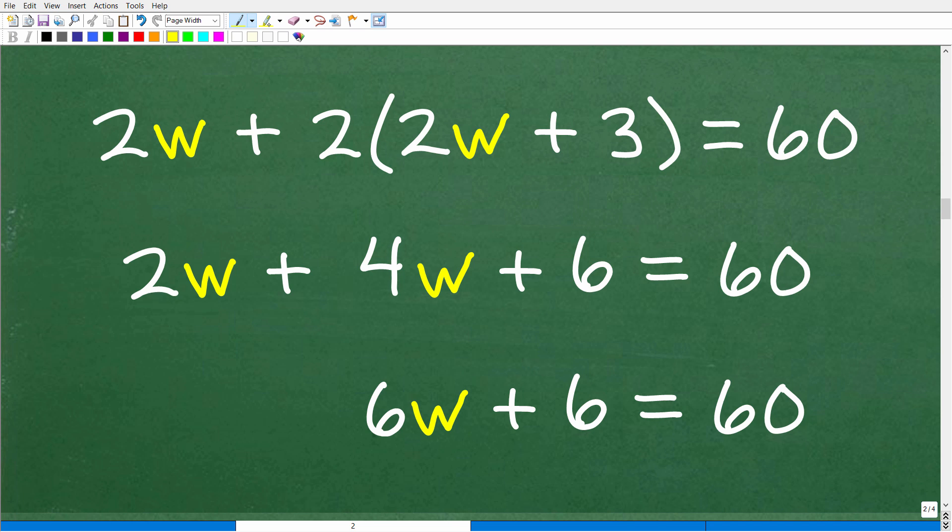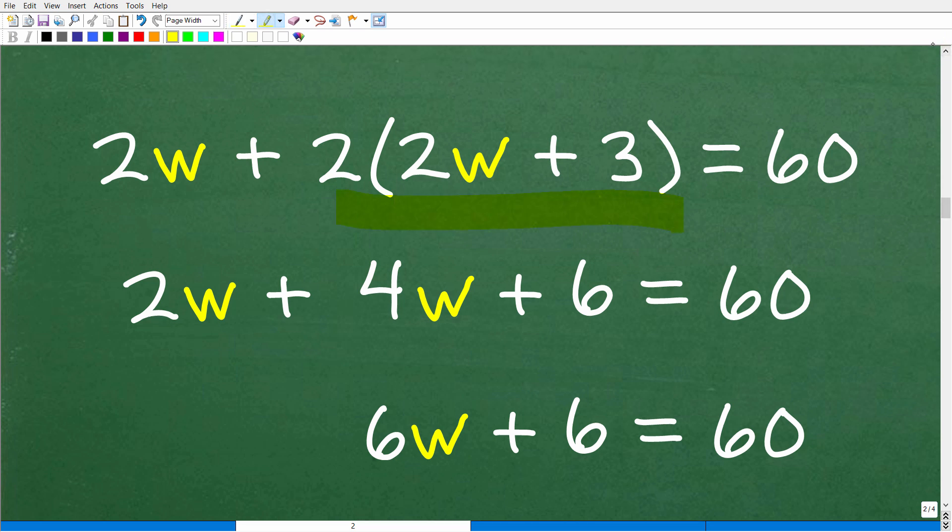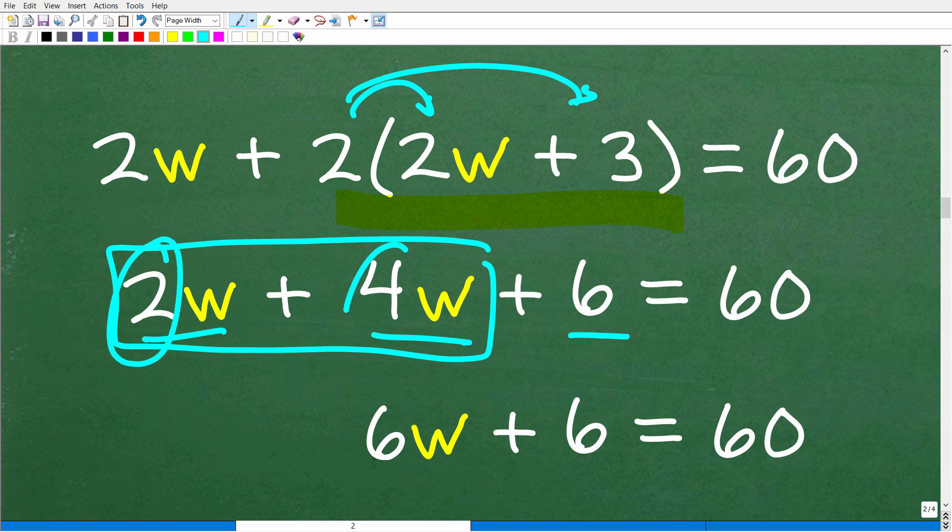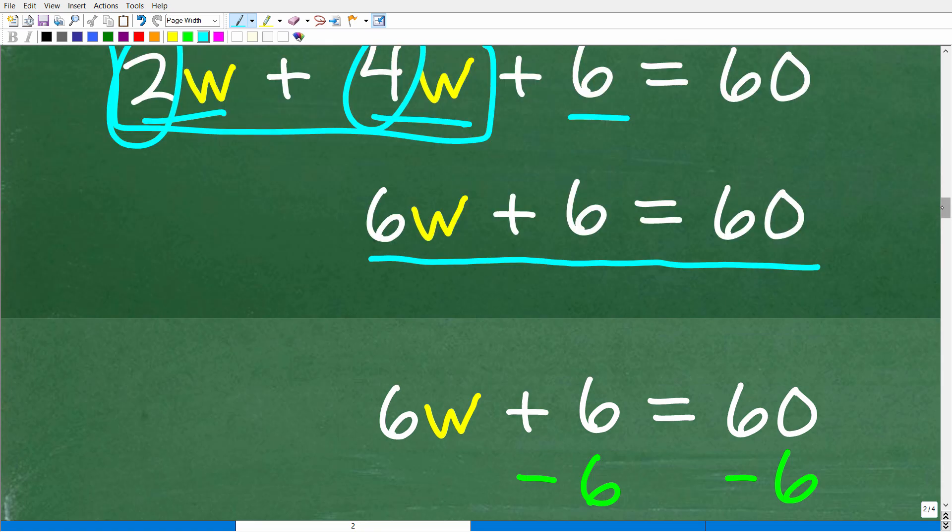Here we go. We get 2W plus 2 times 2W plus 3 is equal to 60. What do we do first? Well, this part of this equation is a part where we need to use the distributive property. Anytime you have a number outside of parentheses, we can't do anything here until we distribute this number to these inside terms. So 2 times 2W is 4W. 2 times 3 is 6. So now I have 2W plus 4W plus 6. 2W and 4W, these here are like terms, so we can add the coefficients, which are the numbers in front of the variables. So 2 and 4 is 6. So now we have 6W plus 6 is equal to 60.